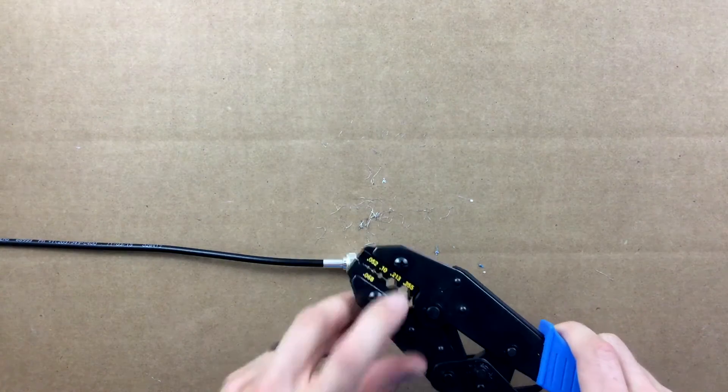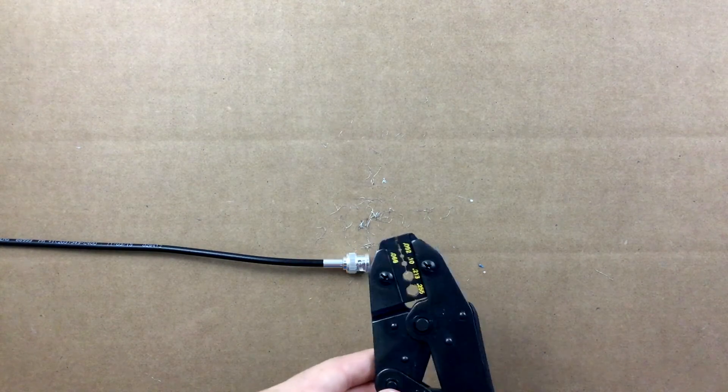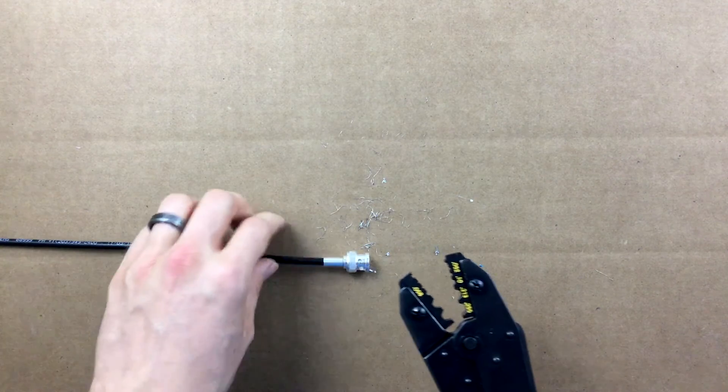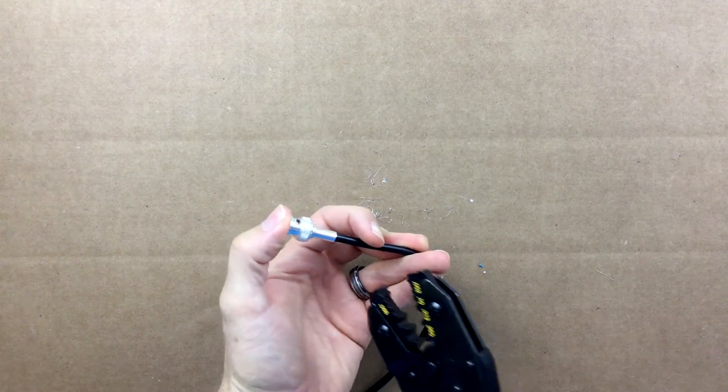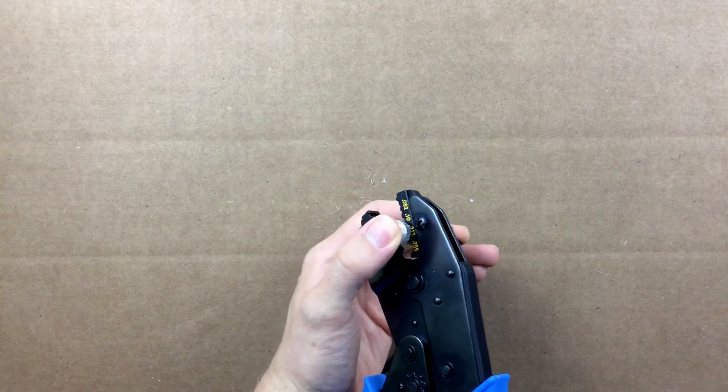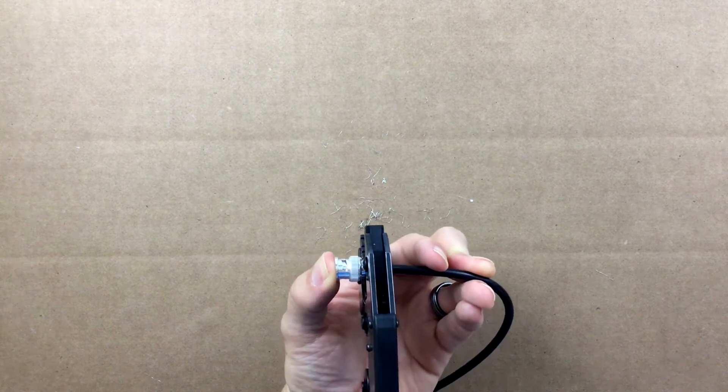Grab your ratcheting crimp tool with the appropriately sized .213 hex die. Open the ratchet and place it on the ferrule as close to the connector body as possible. Squeeze the crimper through its entire range of motion, successfully crimping the ferrule.